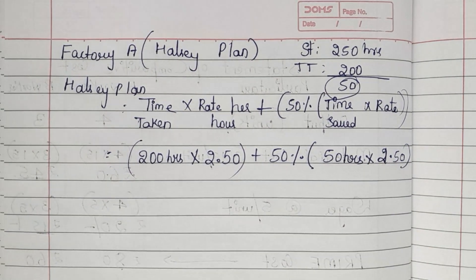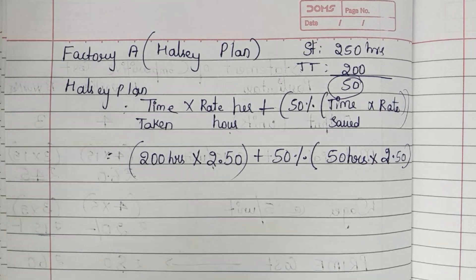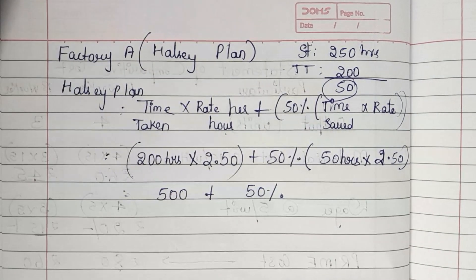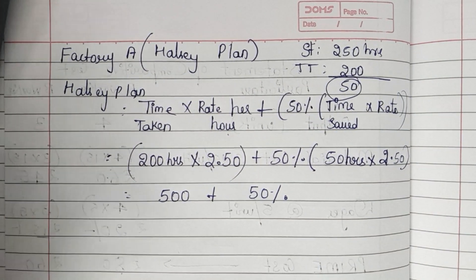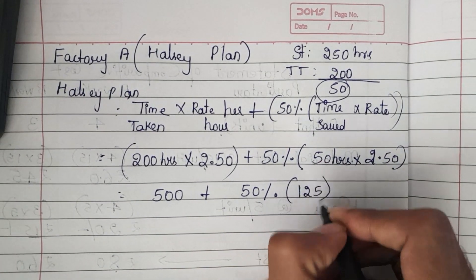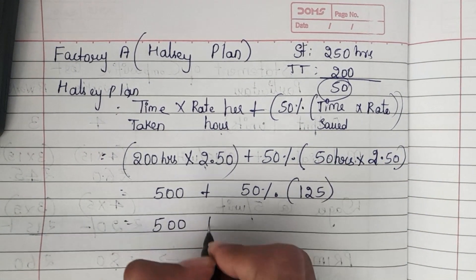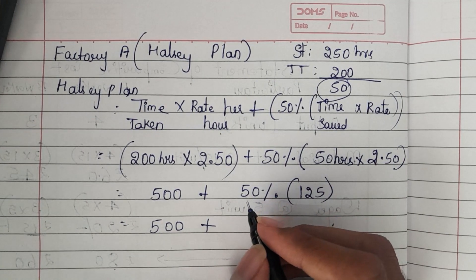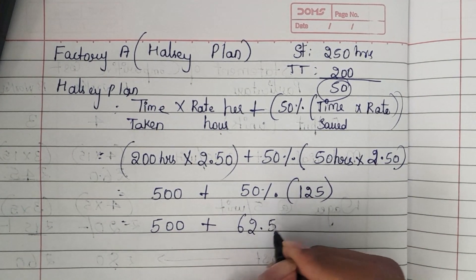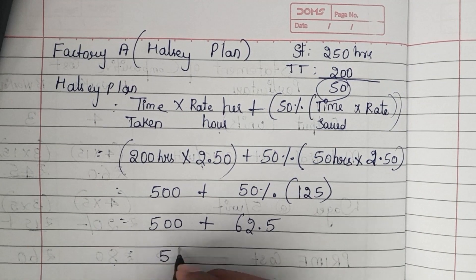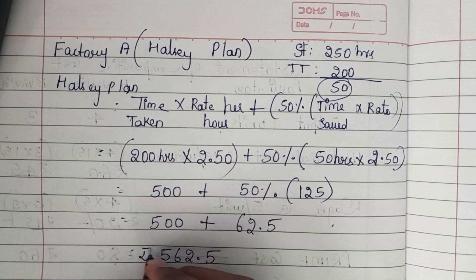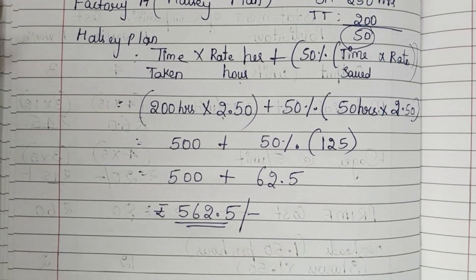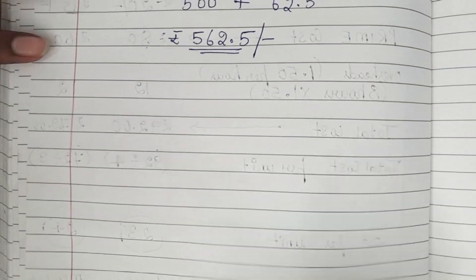Calculating for factory A: 200 into 2.50 is 500, plus 50 percent of time saved — 50 hours into 2.50 gives 125, and 50 percent of 125 is 62.50. So the total wages for factory A under the Halsey plan is 562.50.